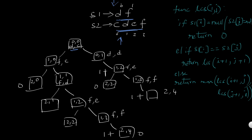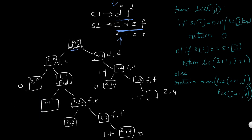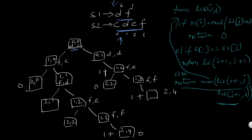Here S1 = 'DF' and S2 = 'CDF'. At position i=0 and j=0, we have D and C — they are not equal. When elements are not equal, we return the max of LCS(i+1, j) and LCS(i, j+1). So we recurse with i=1,j=0 giving us F and C — still not equal. Incrementing i to 2 goes out of bounds for S1, so we return 0.